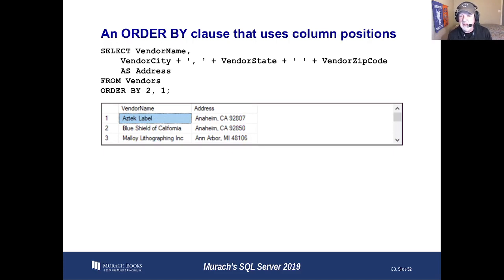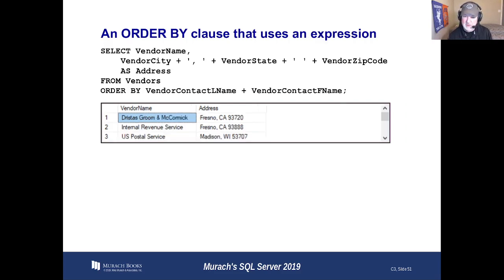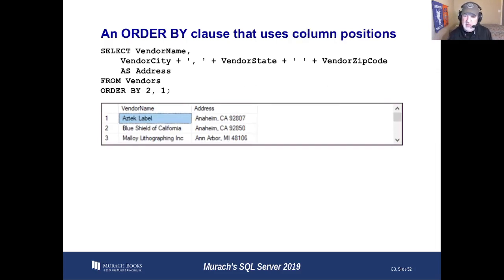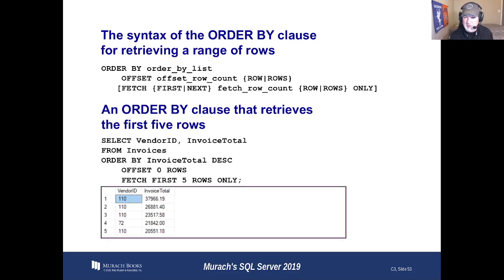The other thing is that you can do it by column positions. How many columns did we end up with? Vendor name, address — one, two. Order by 2, 1. This one is a little wonky, a little harder to read. It would probably be better to just say order by vendor name comma address. But you can do it by column positions if you would like. Always remember that you're coding for the dumbest person on your team, so use the field names if you can, even though this will work perfectly fine.